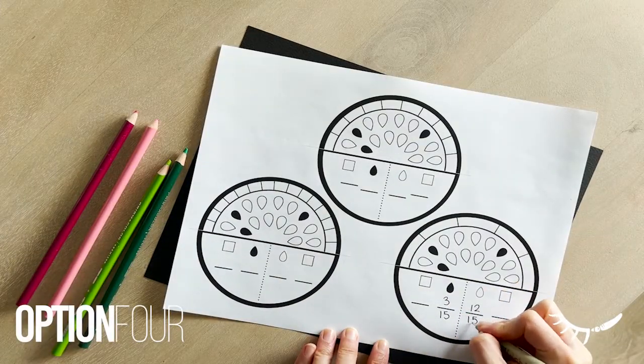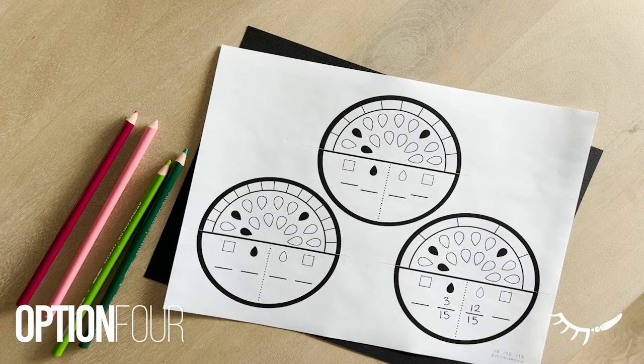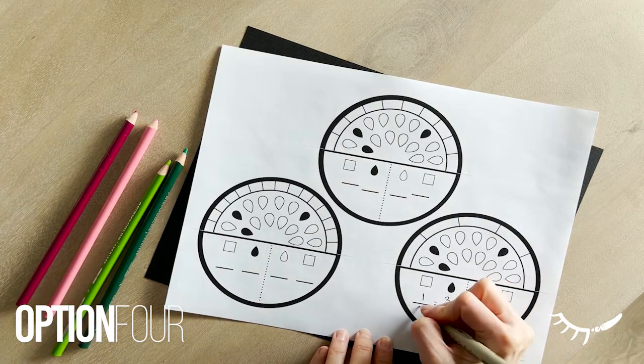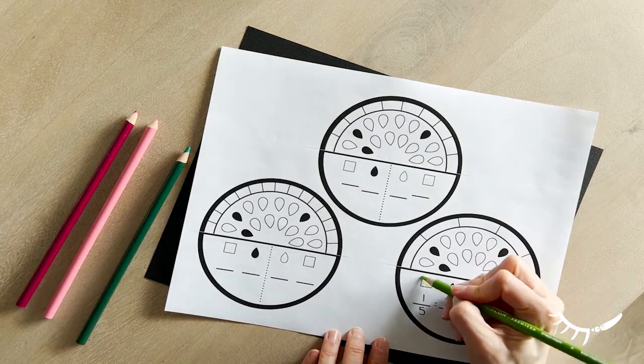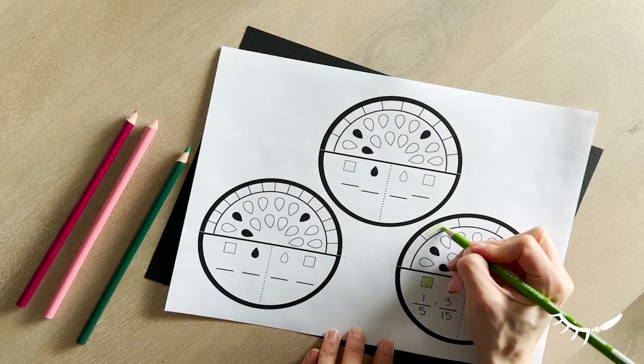Option 4 shows the same number of seeds on each of the three slices. Start by counting the seeds and recording the seed fraction. Next, find an equivalent fraction to represent on the rind segments.